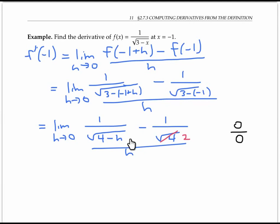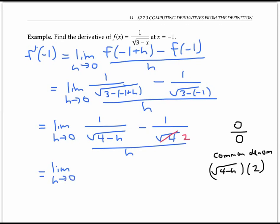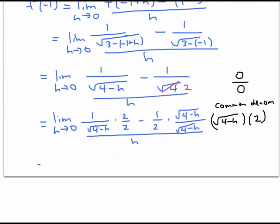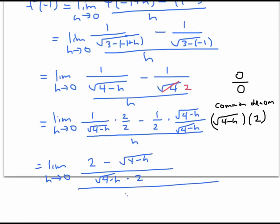The common denominator for my two fractions is the product of the two denominators — that's the square root of four minus h times two. Rewriting with this common denominator, I get the limit of two minus the square root of four minus h, over the square root of four minus h times two, all over h.